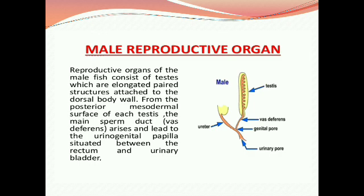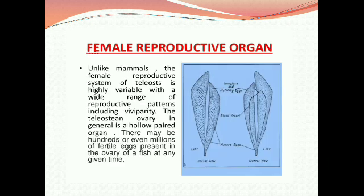Male reproductive organs have testes with different channels connected by the ureter and the urinary pore. The reproductive organ of the male fish consists of testes, which are elongated paired structures attached to the dorsal body wall. From the posterior mesodermal surface of each testis, the main sperm duct and the vas deferens arise and lead to the urogenital papilla situated between the anus and the urinary bladder. Next, here is a picture of the female reproductive organs.